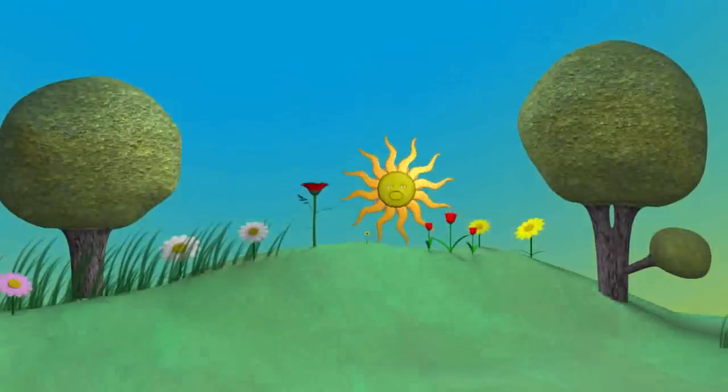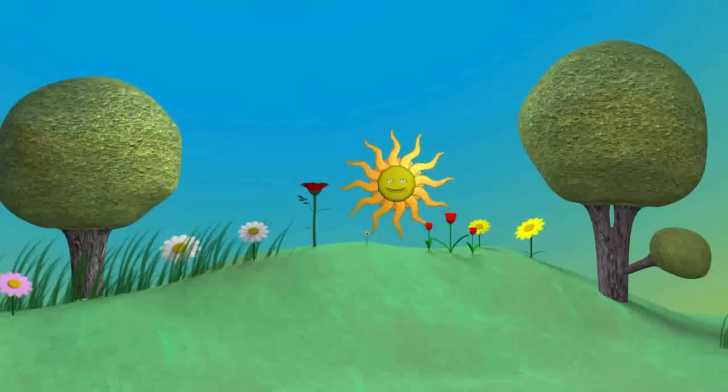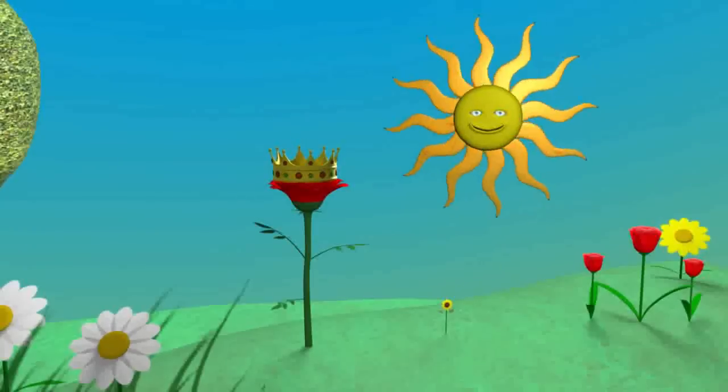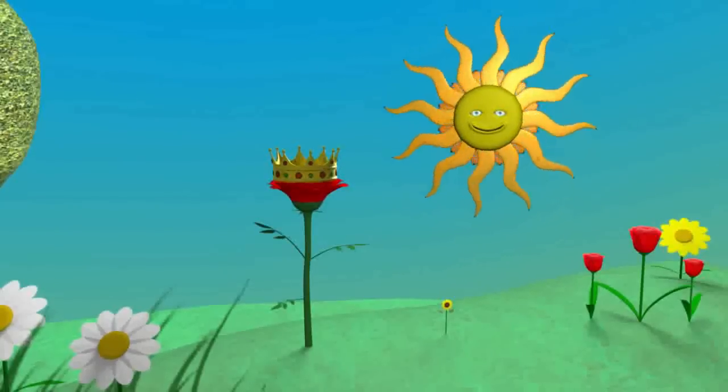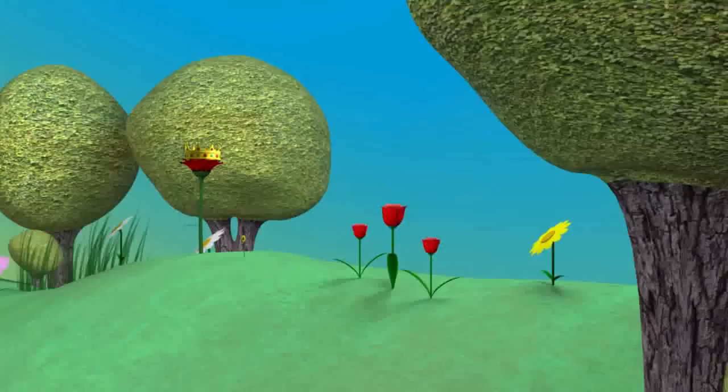One day all the flowers decided that the red rose would be the queen of all flowers because of her beauty and because she could grant wishes. They made a big party to crown their queen and each flower made a wish.